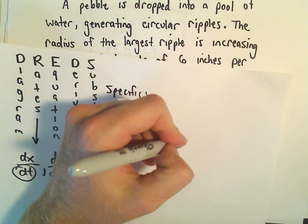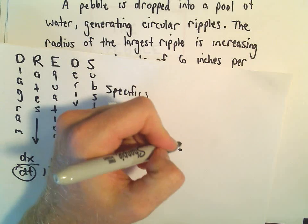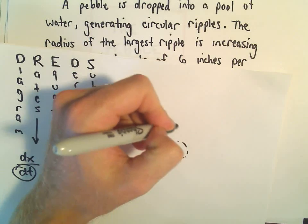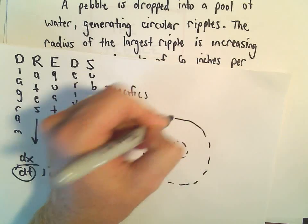Okay, so in this problem, we've got a little, we drop our little pebble in there. And then it creates a little ripple. And the ripples increase as time increases.